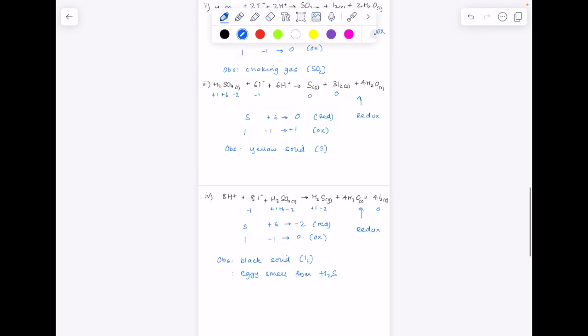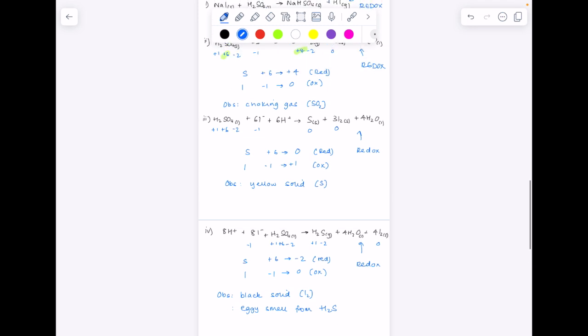And just to bear this all in mind, remember, this series of equations is showing to you that as you descend group seven, those halide ions become stronger reducing agents.